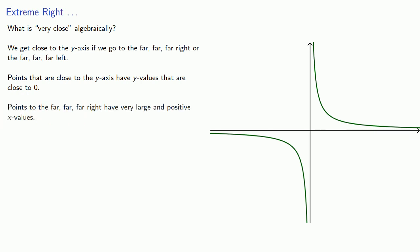Points to the far right have very large and positive x-values. So we write: y → 0 as x → ∞, where the infinity symbol represents the idea that however big a number we have, we'll make it larger.